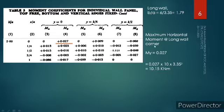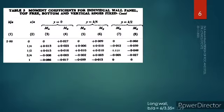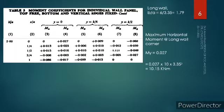For the long wall corner, using y = 0 (corner part) with coefficient My = 0.027, the formula is coefficient × w × a³ = 0.027 × 10 × 3.35³. After simplifying, the maximum horizontal moment at the long wall corner is 10.15 kNm.